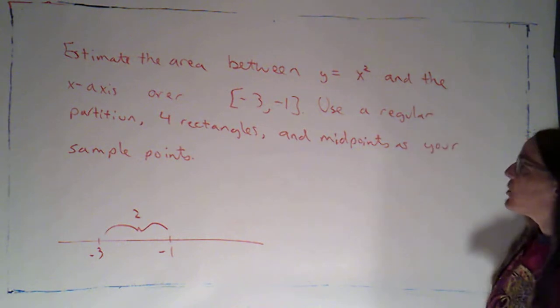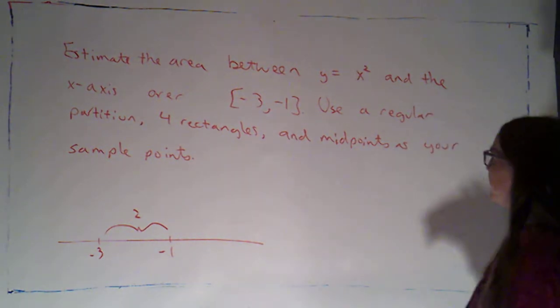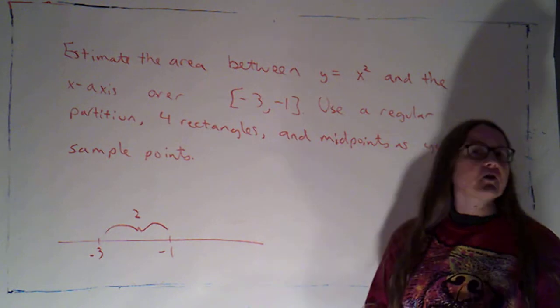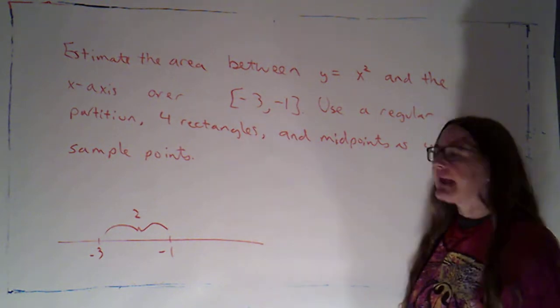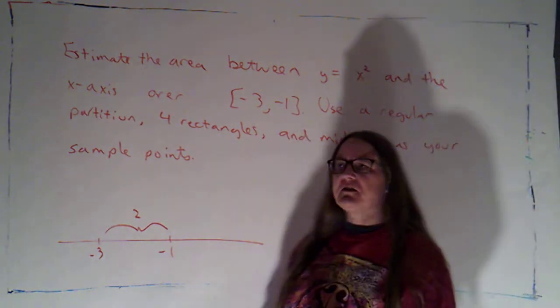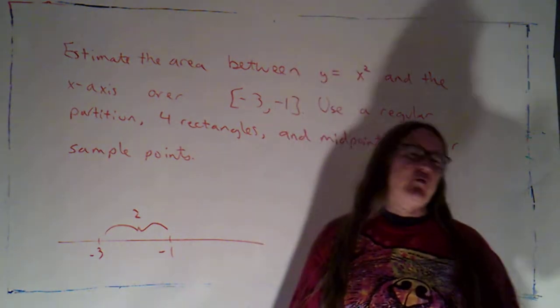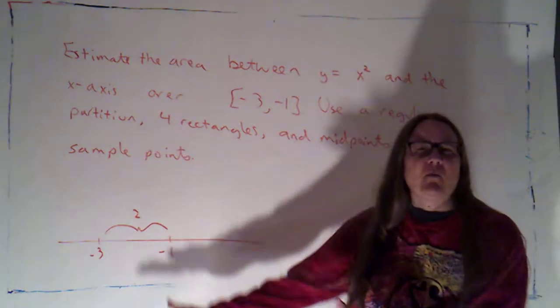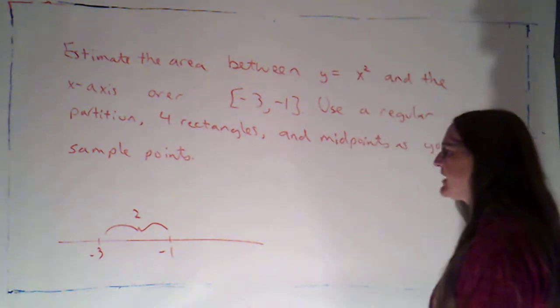I'm asking us to use a regular partition. We're going to use four rectangles. And we're going to use midpoints as our sample points, which we haven't done yet. Your text actually doesn't introduce using midpoints until section 5.2, but we're almost there. I'm going to go ahead and introduce it now.